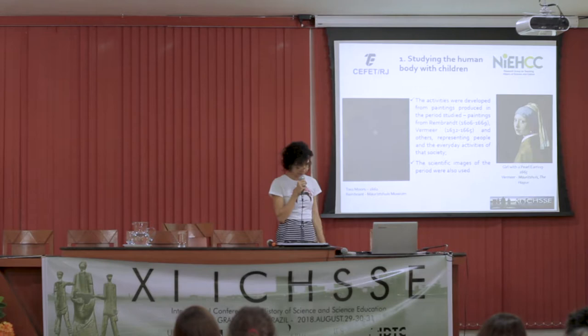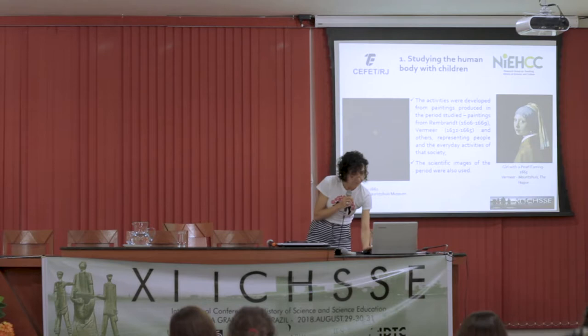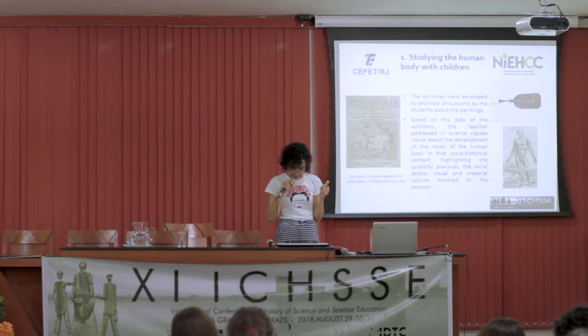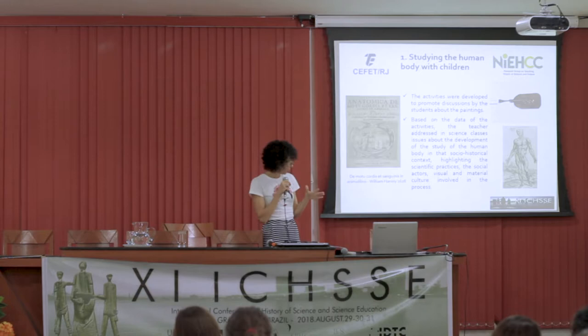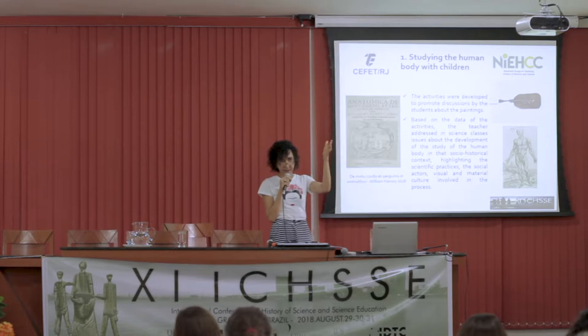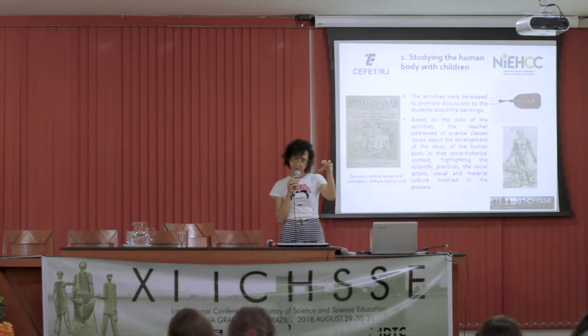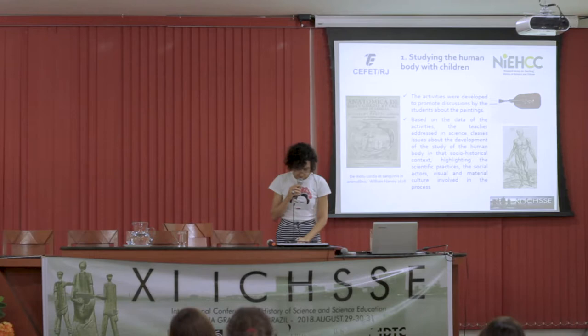The teacher developed activities from paintings, including shield paintings from Rembrandt and Fermi. The teacher also used scientific images of the period. All the activities were developed to promote discussion of the students about the paintings. Based on the analysis of data from these activities, the teacher addressed in science class issues about the development of the study of the human body in that socio-cultural context, highlighting the scientific practice, the social actors, and the visual and material culture involved in the process. Sometimes these schools don't have a data projector, so you print the images and develop activities where students are given an image to discuss what they see and what they think about it, and after that you discuss in groups the historical issues you want.